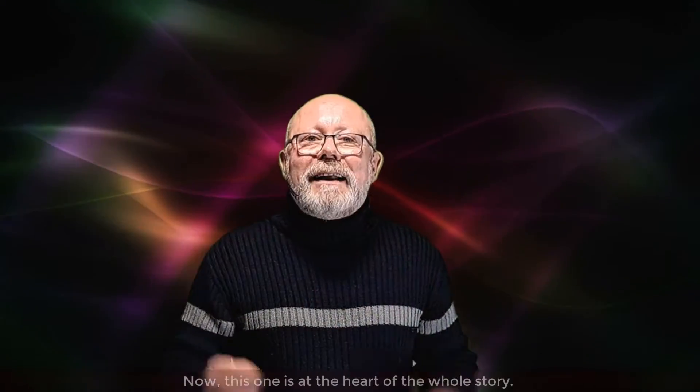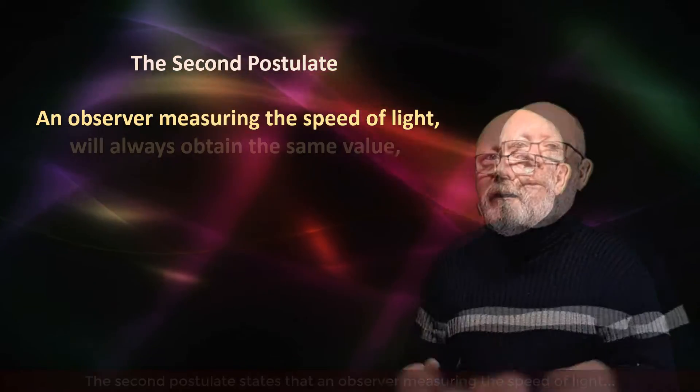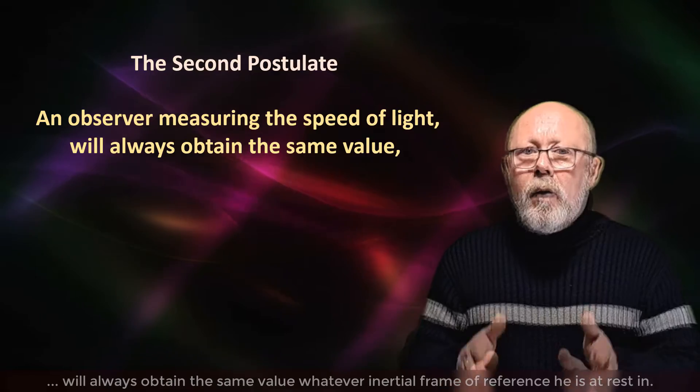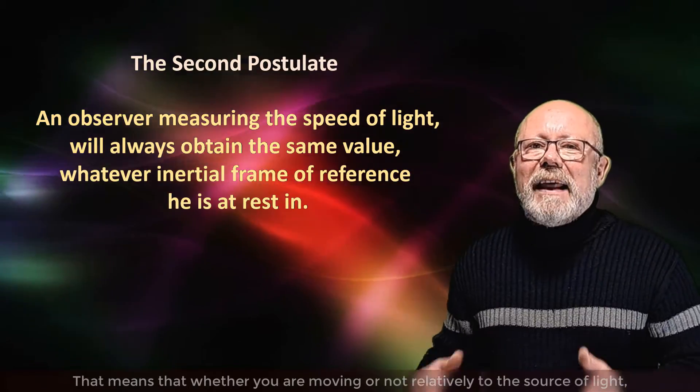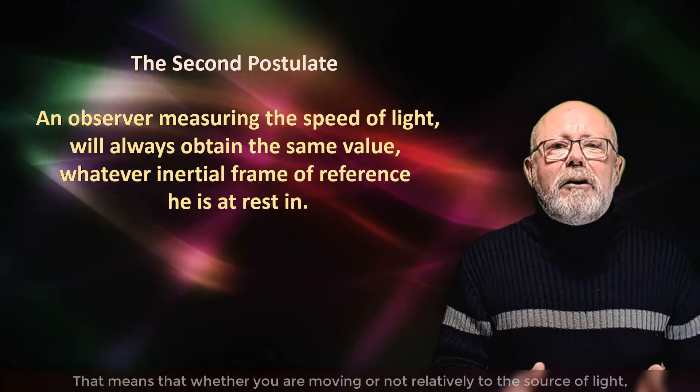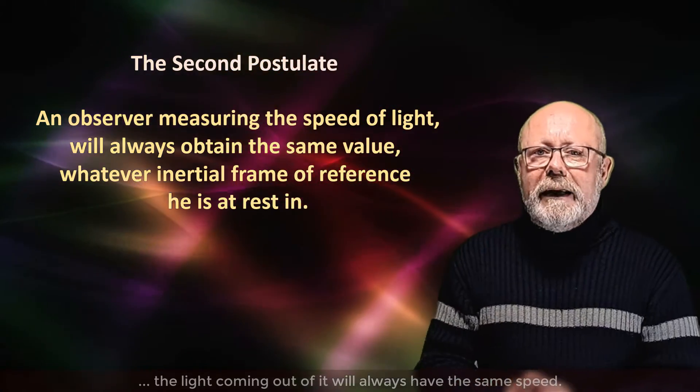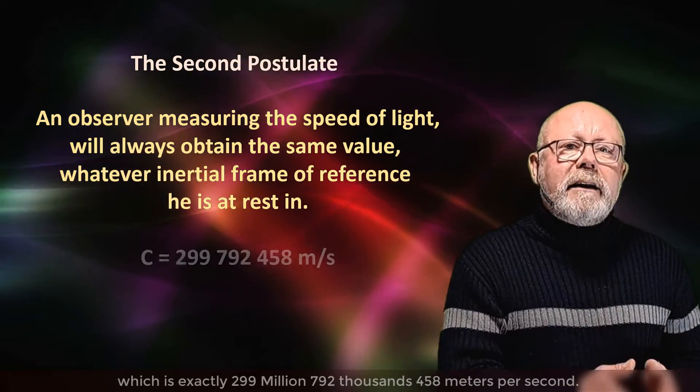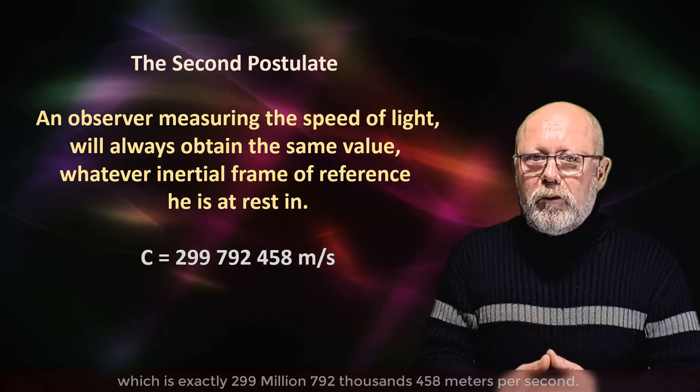Now this one is at the heart of the whole story. The second postulate states that an observer measuring the speed of light will always obtain the same value, whatever inertial frame of reference he is at rest in. That means that whether you are moving or not, relatively to the source of light, the light coming out of it will always have the same speed.